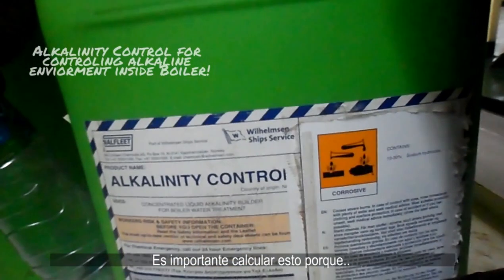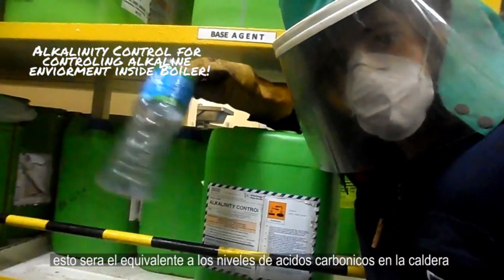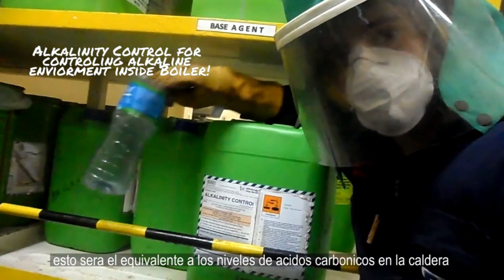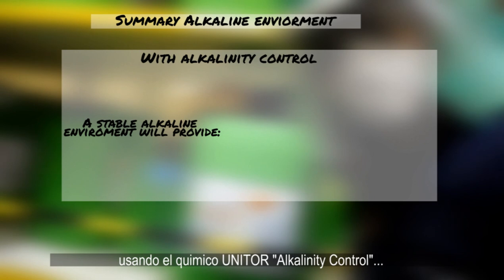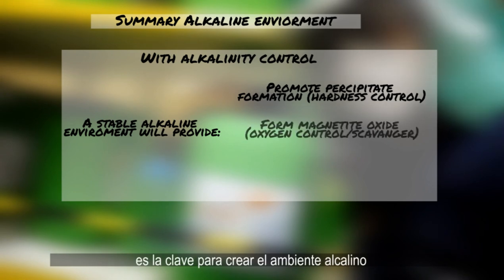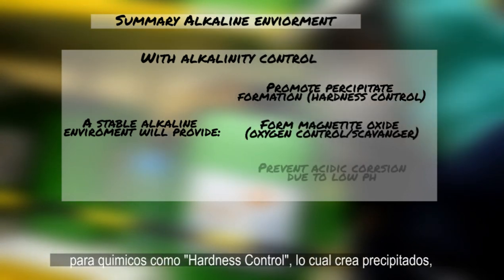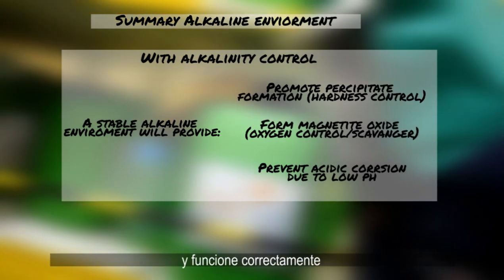It's important to calculate this because it's equivalent to the carbonic acid levels in the boiler, which should be controlled using the Unitor chemical alkalinity control. As previously mentioned, alkalinity control is key to creating the alkaline environment for chemicals like hardness control that create precipitates to work correctly.